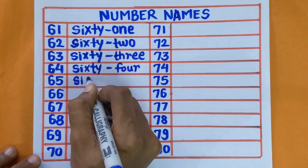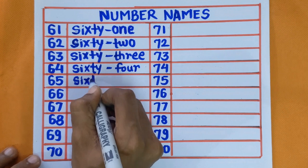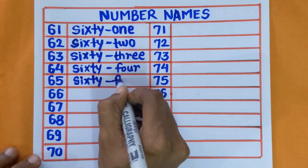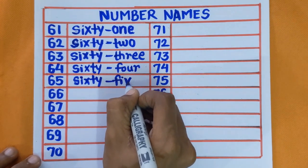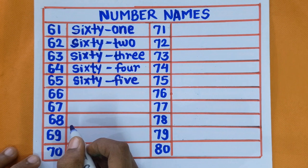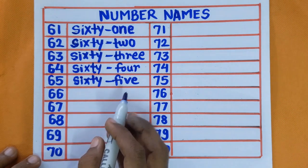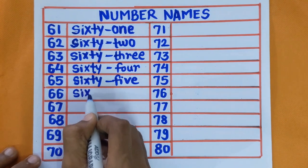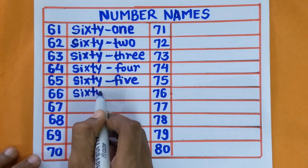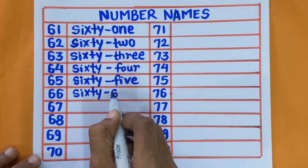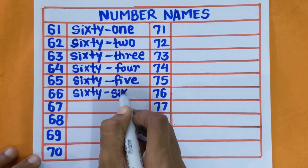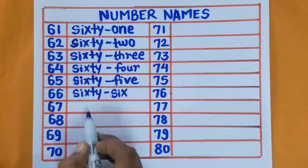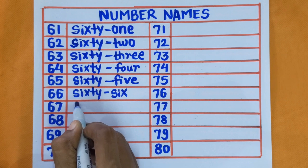65 — S-I-X-T-Y-F-I-V-E. 65. 66 — S-I-X-T-Y-S-I-X. 66. Next is 67.